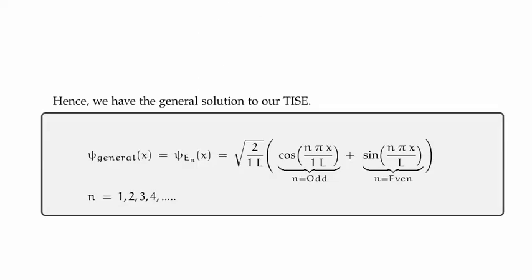So we have the general solution to our time independent Schrödinger equation for a particle living in an infinite potential well extending from negative to positive L over 2. We have root 2 over 1 times L, outside of cosine(n pi x / L) and sine(n pi x / L).